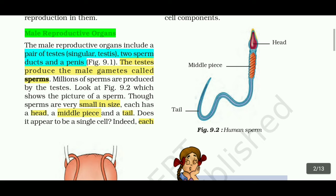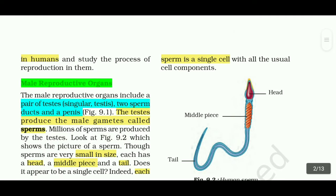Millions of sperms are produced by the testes. Those sperms are very small in size. Each sperm has a head, a middle piece, and a tail — as you can see in figure 9.2. This sperm is a single cell with all the usual cell components.